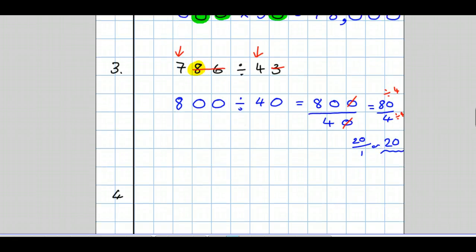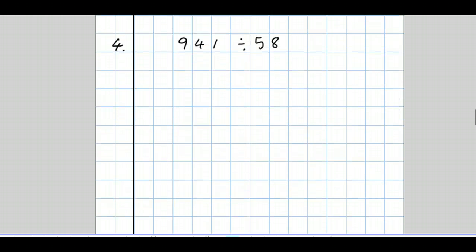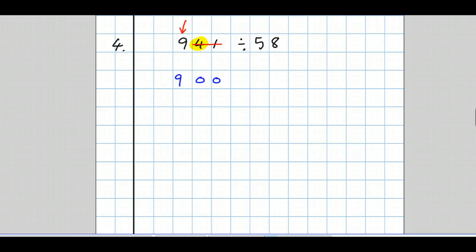Let's look at that again. Question 4: 941 divided by 58. So first we round them to one significant figure — keep the first non-zero, get rid of all the others. The first one I crossed out here was a 4, so that 9 remains unchanged, but it was in the hundreds column, so I add two zeros. Now we're going to round 58. That was an 8 I crossed out, so the 5 goes up by 1. Remember: if the first figure you cross out is 5 or more, the number you keep goes up by 1. But that 5 was in the tens column, so the 6 needs to be in the tens column, so we add a zero.